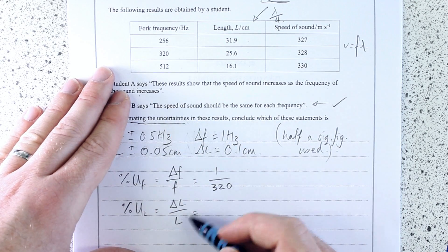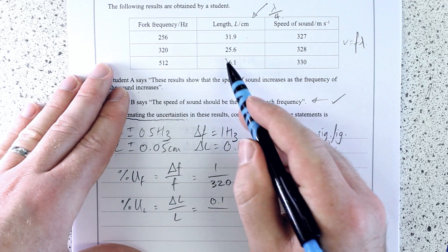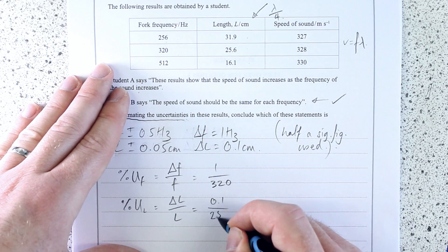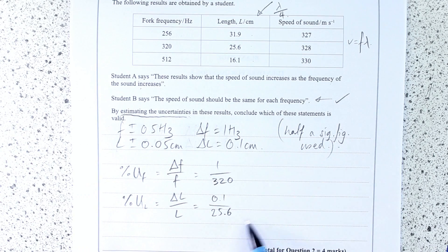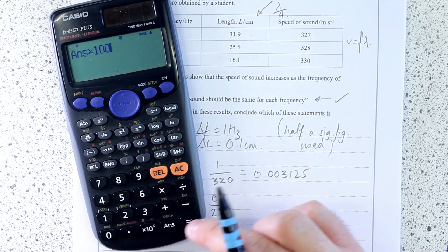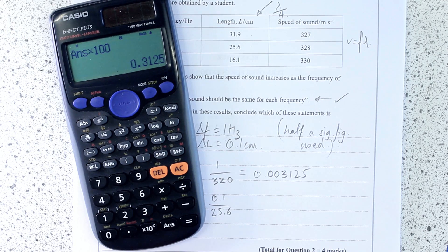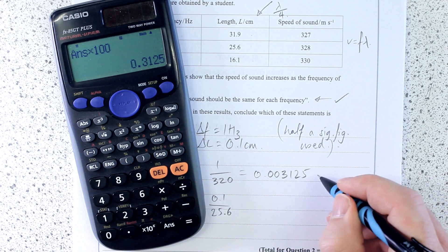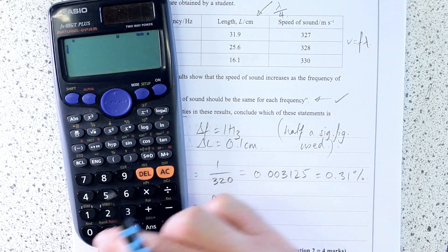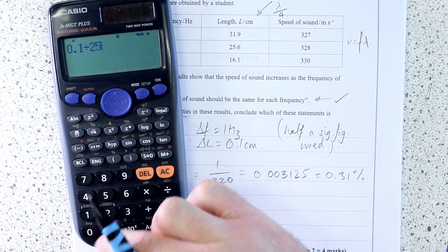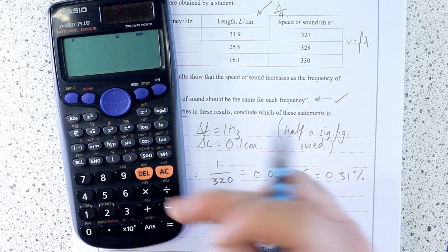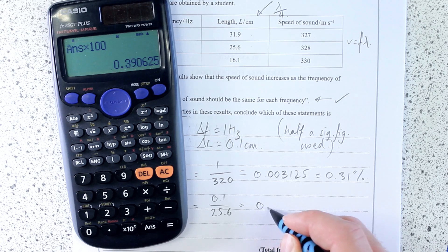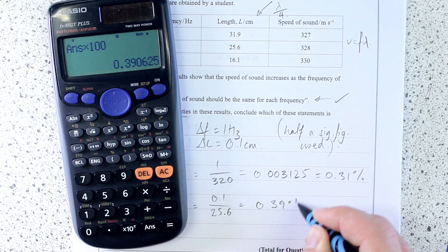For length, delta L is 0.1 and the length is 25.6. I'm using centimetres because I'm just doing a ratio. Multiplying by 100 to give a percent: that's 0.31%. And then for length: 0.1 over 25.6, multiplied by 100, is about 0.39%.